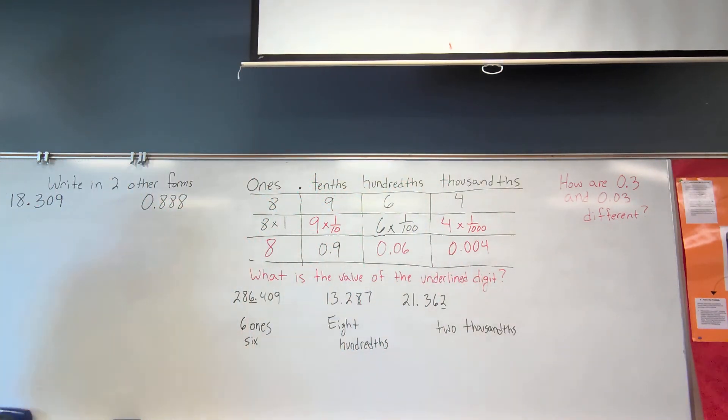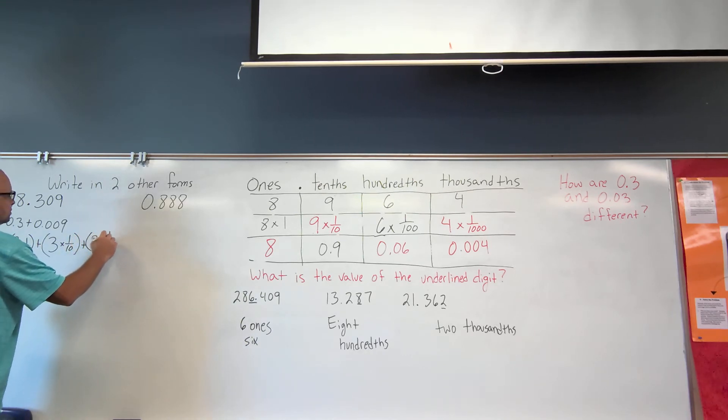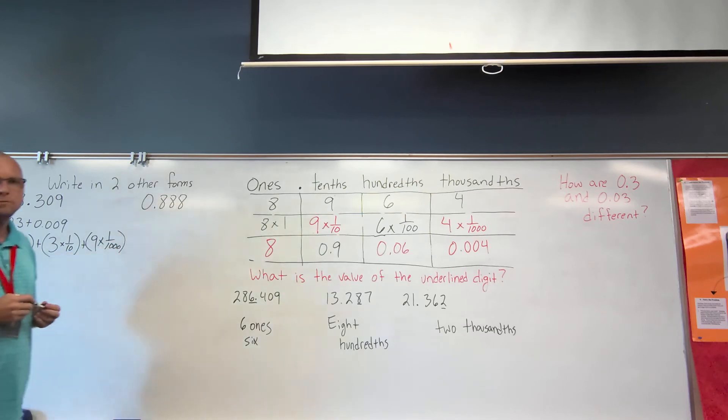Maddie D, which number do you want to start with? The first one. And Maddie D, what form do you want to write it in? Expanded form. Okay, so Maddie D, tell me what I do. You write 10 plus 8 plus 0.3 plus 0.009. All right, nice. You may have written it 1 times 10 plus 8 times 1 plus 3 times 1/10 plus 9 times 1/1000. So I may have seen it written some way that way.